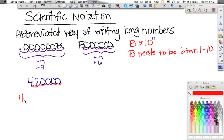So the number is going to be 4.2, and then we put times 10. We moved the decimal 1, 2, 3, 4, 5 to the left. So that means it's going to be a positive 5. So 420,000 written in scientific notation is 4.2 times 10 to the 5.